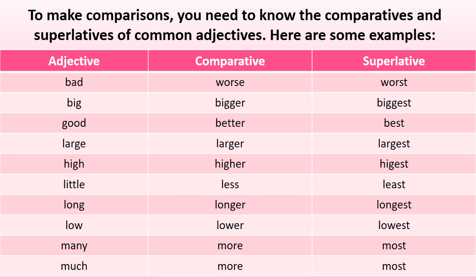In a bar graph you have to compare trends, so you need to know the comparative and superlative forms of common adjectives. For example: bad, worse, worst; big, bigger, biggest; good, better, best. When comparing two things, use the comparative degree — better, bigger, larger, higher — always followed by 'than'. The superlative is used for more than two and is always preceded by 'the' — the biggest, the best, the largest, the highest.